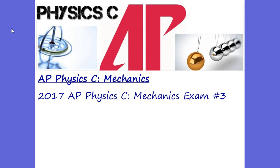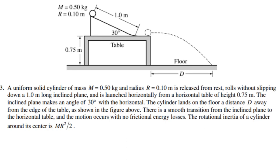Hey, this is Mr. Aden. This is the AP Physics C Mechanics 2017 AP exam, problem number three. This finishes out the 2017 exam. On every single exam there's going to be a rotational problem, and here it is. The rotational inertia of the cylinder is one-half mR squared, so we have a cylinder rolling down — not only gravitational potential energy, but also rotational energy and rotational kinematics to consider.